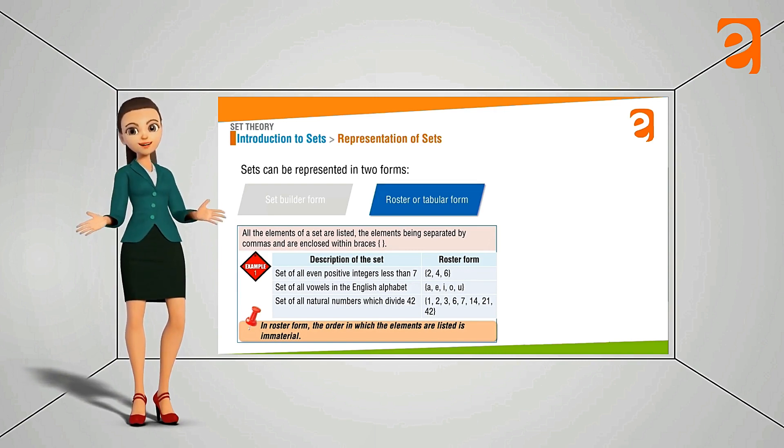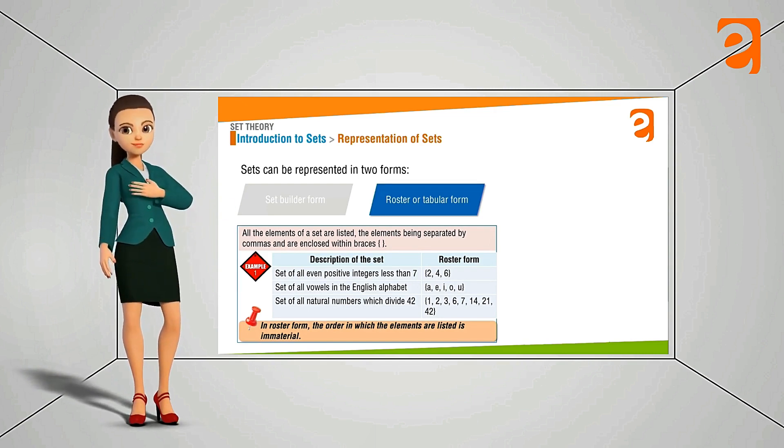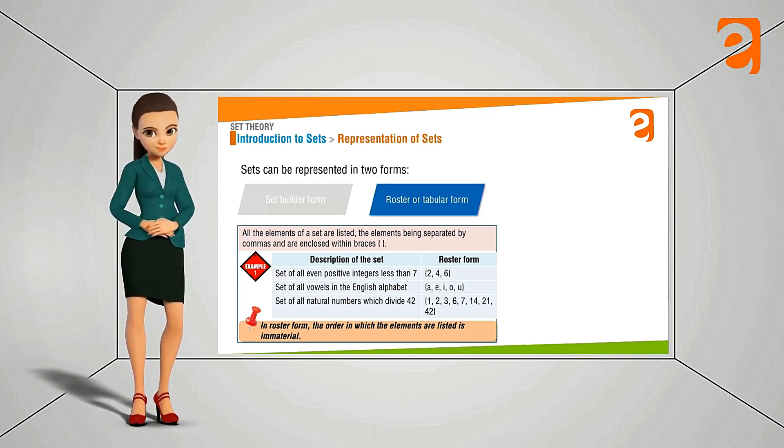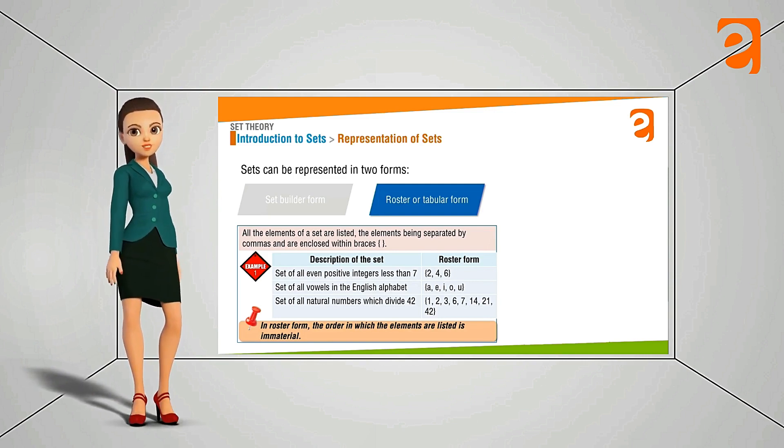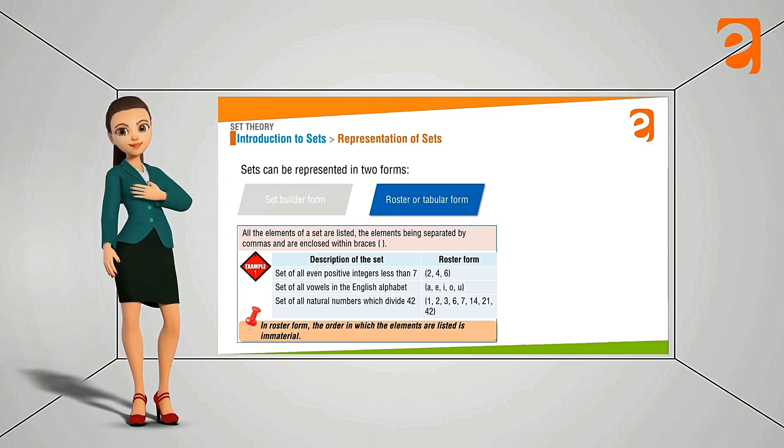If we are writing 4, 2, 6 both the sets are same. If we are writing 6, 2, 4 it is again going to be same. This means that in the roster form order of the elements is immaterial. You can write anything anywhere but it should be inside the curly bracket.